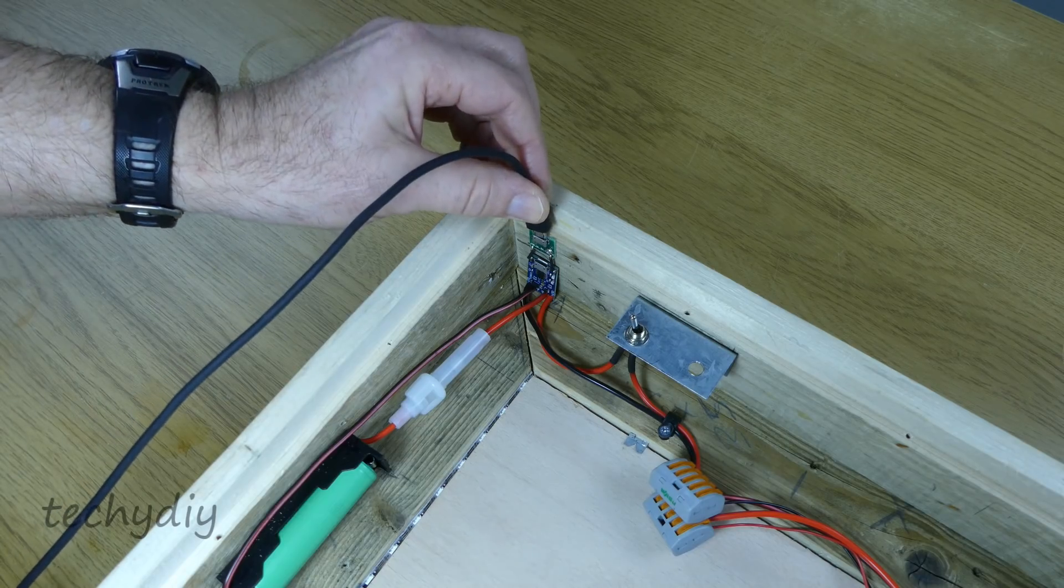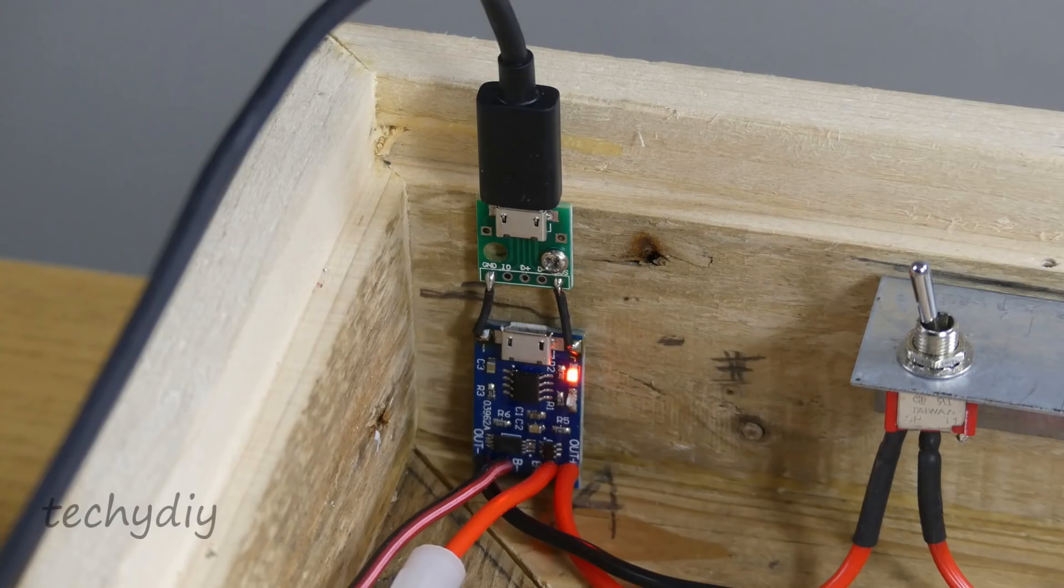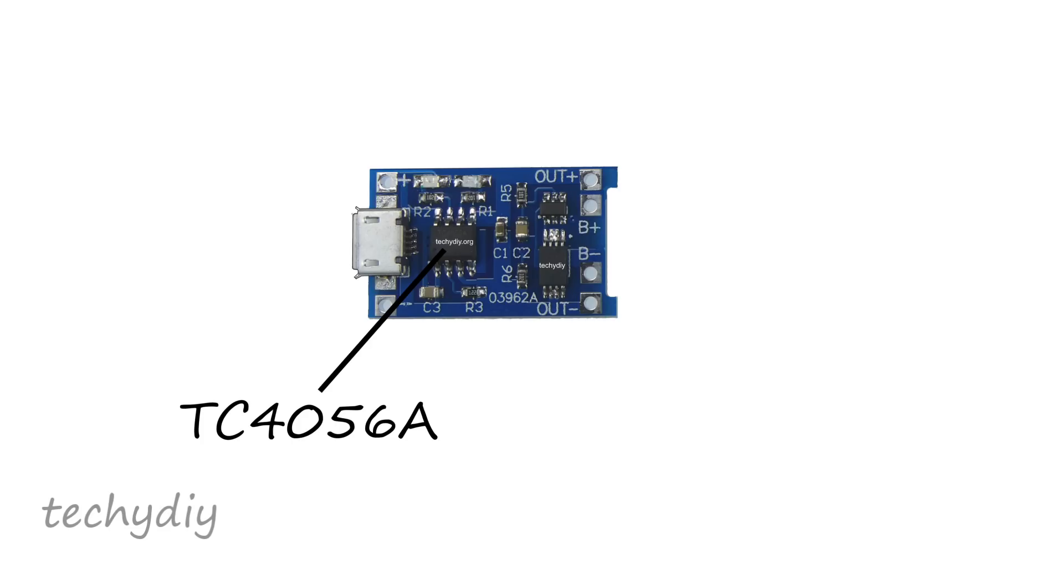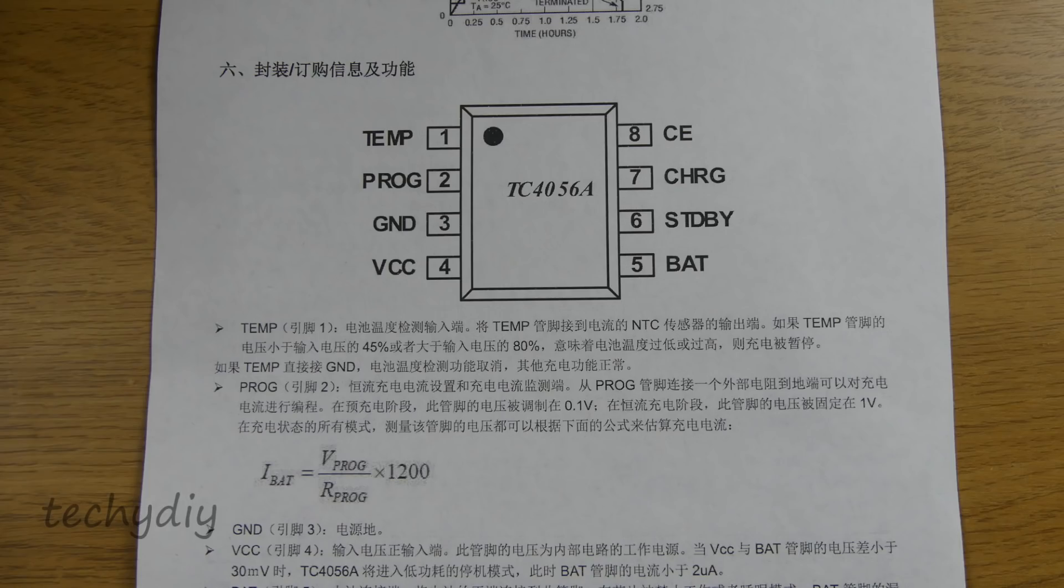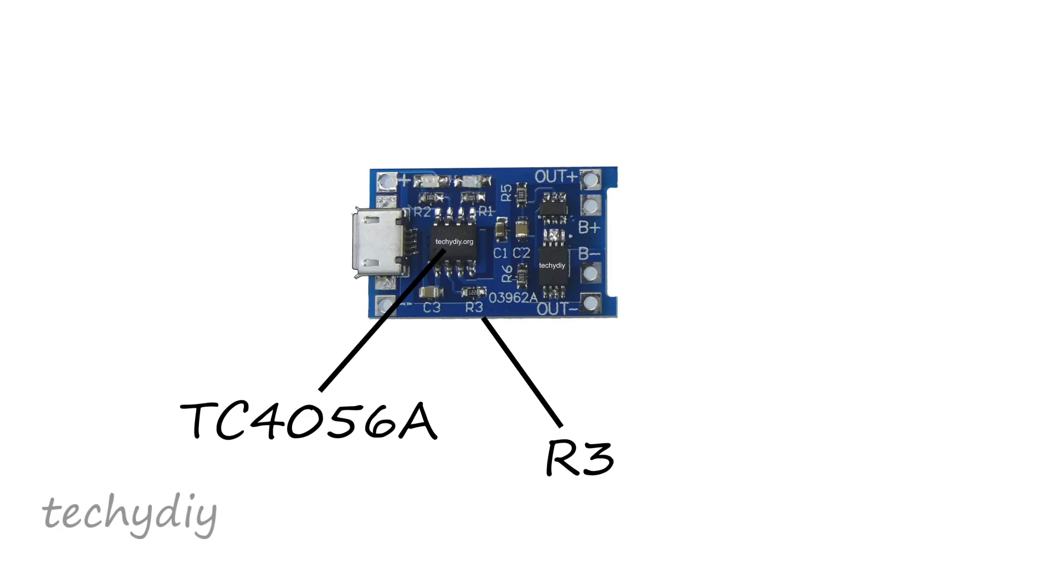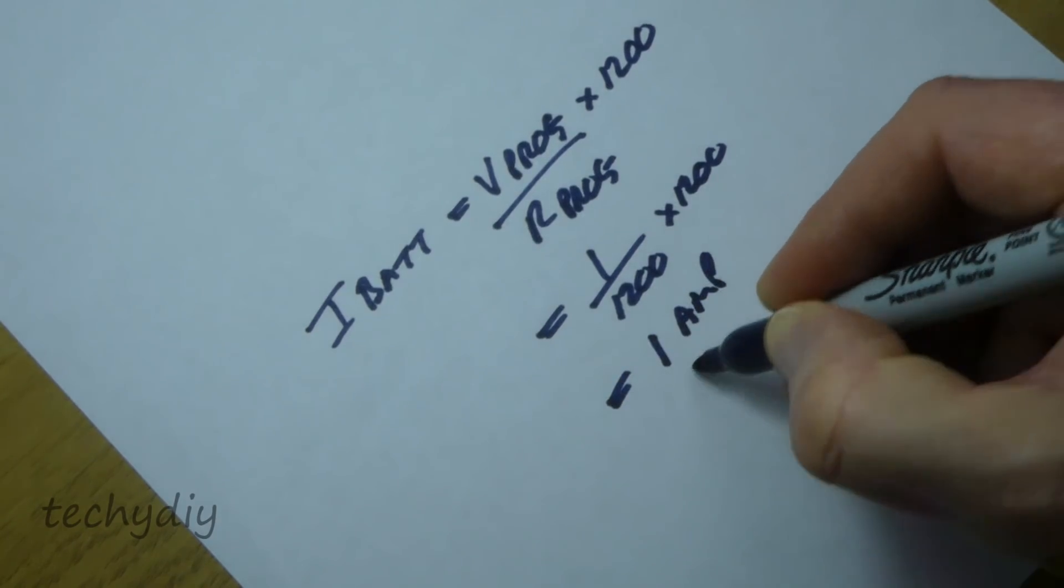The battery is charged by plugging a 5 volt power supply into the micro USB connector. The LED glows red while it's charging and blue when it's fully charged. On this module the charger function is provided by a TC4056A integrated circuit which according to the datasheet is a complete constant current stroke constant voltage linear charger for single cell lithium ion batteries. The maximum charging current is set by a resistor connected between pin 2 prog and ground. On this module it's R3 and its value is 1.2kohms.